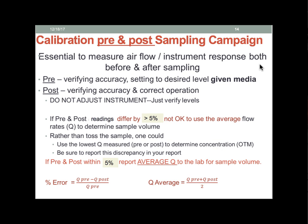So we calibrate before we sample — pre-calibration — to set the appropriate flow rate, which is also a check to see if our pump is performing appropriately. After we're done sampling, we post-calibrate our pump as soon after the sampling campaign ends as possible. We don't make any adjustments to our pump — we just check the flow rate to see if it's within a certain range. If it differs by too much, we might not be able to use our data. Also, we need to calculate a sample volume to send to the lab, which will be based on our flow rate and the time for which we sampled.